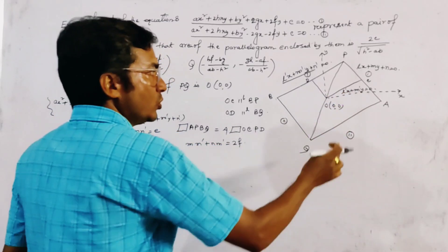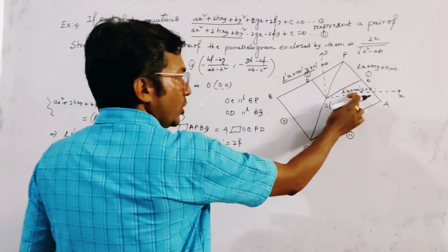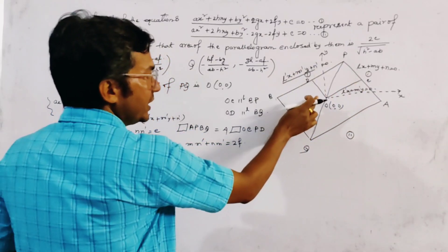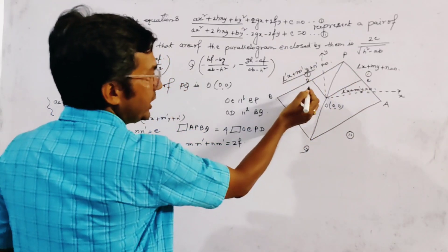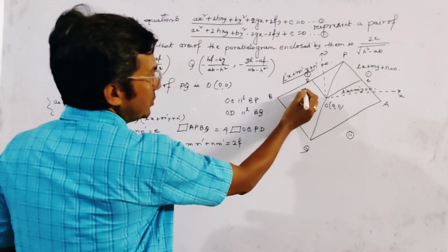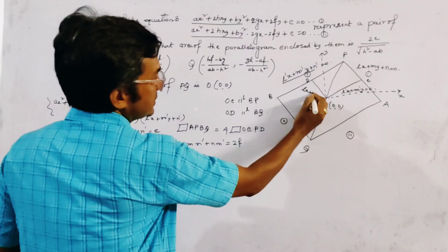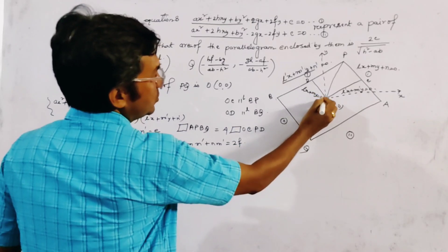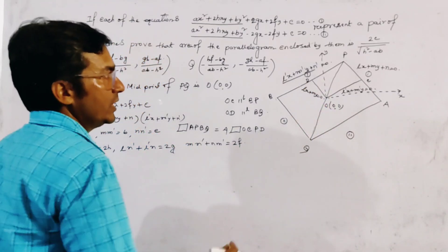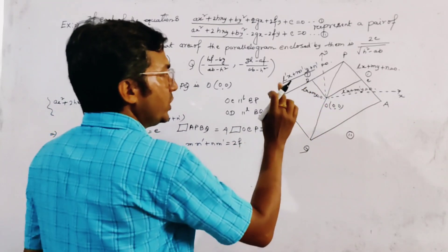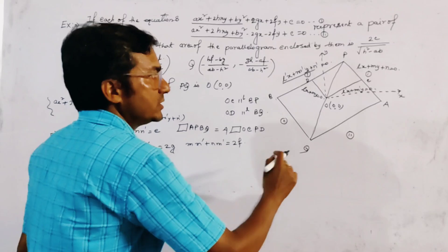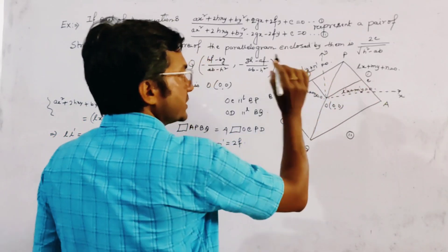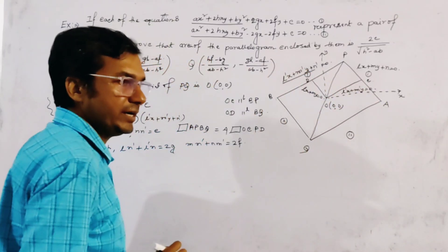The equation of line OD is lx + m'y = 0, since it passes through the origin. Now we have to find the points of intersection C and D.